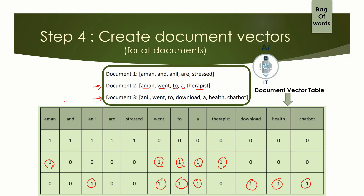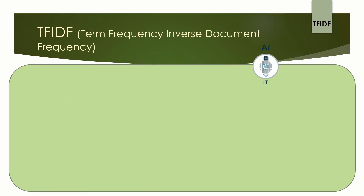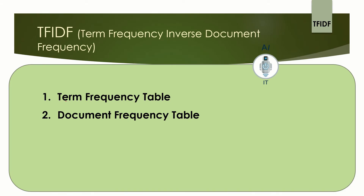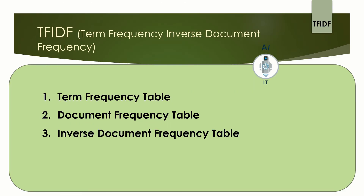Now let us understand the next algorithm, TF-IDF, which stands for Term Frequency Inverse Document Frequency. In this, we have four different tables to be constructed: the first is the term frequency table, the second is the document frequency table, the third is the inverse document frequency table, and the last one is the TF-IDF table.